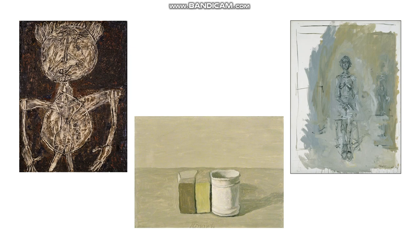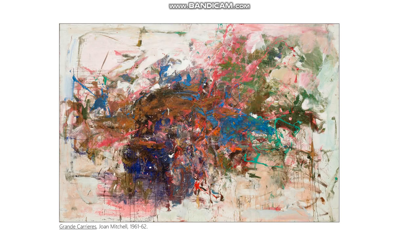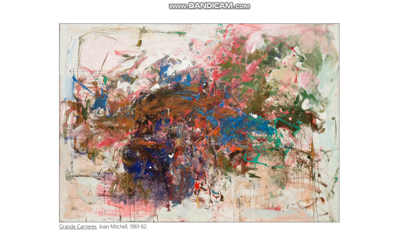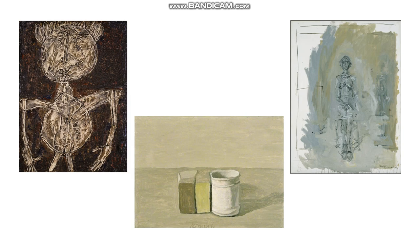Welcome back to our lecture on the second part of the Crisis of Modernism, which is one of our lectures for Unit 11. When we last left off, we talked a little bit about American Abstract Expressionism and where artists were going from that point. I wanted to make sure everyone was clear that it wasn't like there was nothing going on in terms of painting and art in Europe.